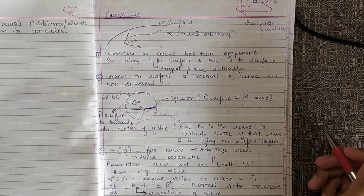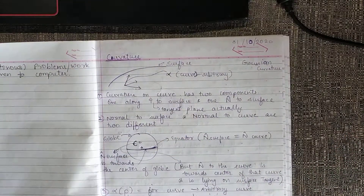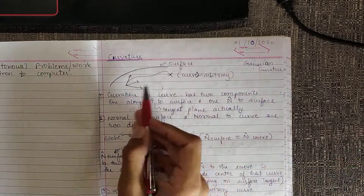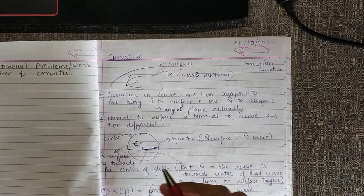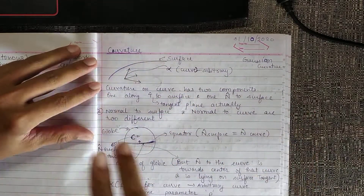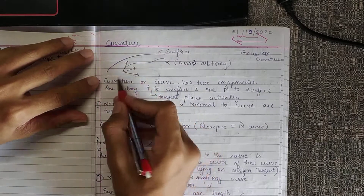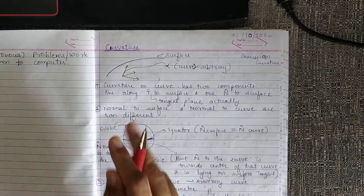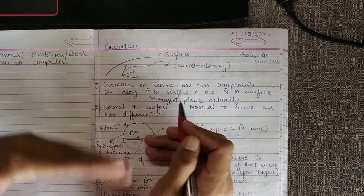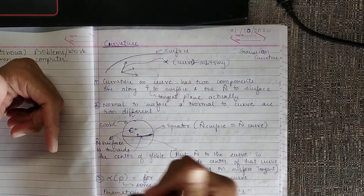Continuing with the surface, we were defining the curvature of the surface. Earlier I tried to explain that there are two components of curvature: one coming from the curve itself and one coming from the surface curvature. Mathematically, those curvatures can be taken in two components — one along the tangent plane of the surface and another towards the normal of the surface.